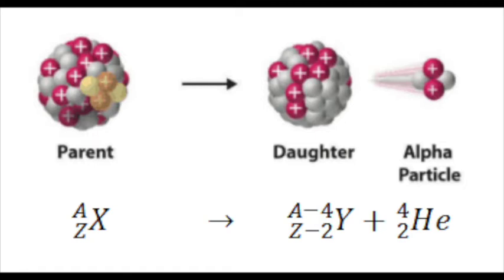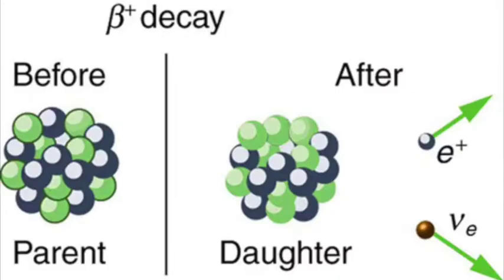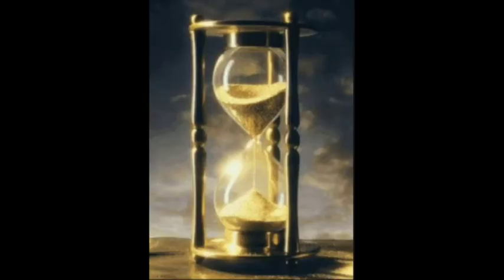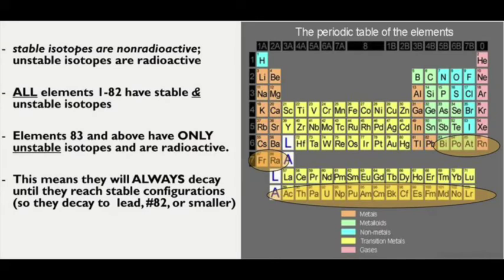The unstable isotope is called the parent isotope, and the stable one is called the daughter isotope — so parent is unstable and daughter is stable. It's like an hourglass: the sand on top is the unstable one, the flowing down of the sand is the decay, and when the sand reaches the bottom it becomes stable — that is the daughter isotope.